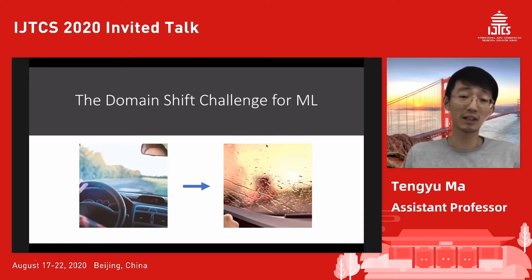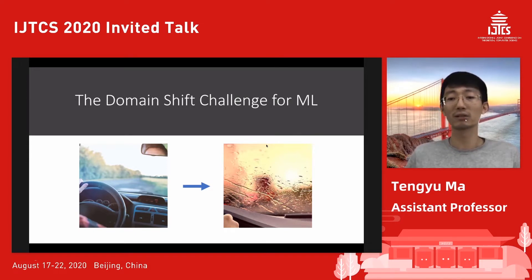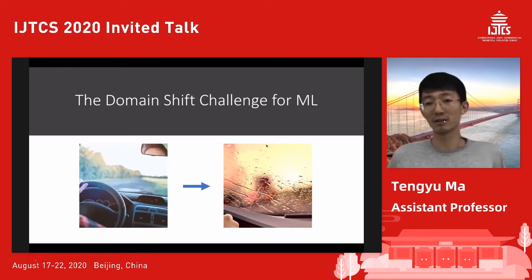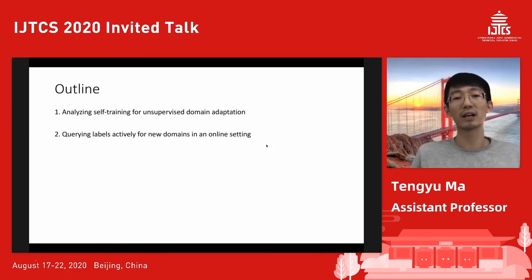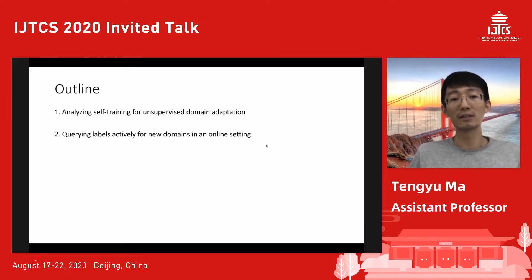This also applies to many other situations. For example, if you apply your machine learning model for risk-sensitive domains like healthcare — when you arrive at a new hospital and apply your models — often the accuracy drops compared to the training environment. So how do we address domain adaptation? I'm a theoretician and these are two works on the theoretical aspect. One is about analyzing self-training for unsupervised domain adaptation, and the other is about how to learn new domains actively by querying more labels in an online fashion.